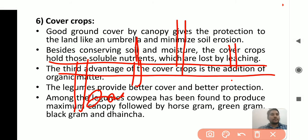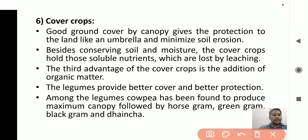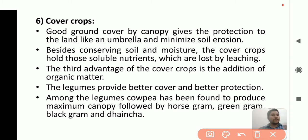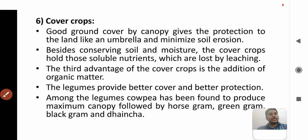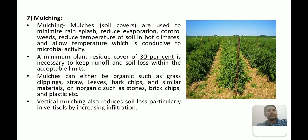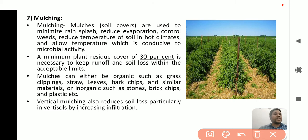Cover crops mean growing leguminous crops to protect the land from overgrazing and to conserve soil moisture. They also help retain soluble nutrients against leaching. Different types of cover crops include horse gram, green gram, black gram, and dhancha — leguminous crops grown to reduce soil loss.